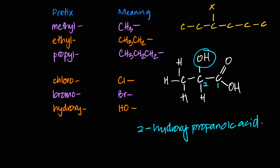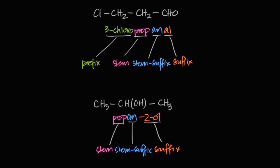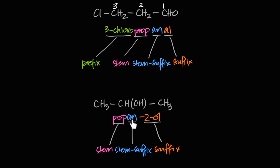Now let's look at some naming examples. This structure has one, two, three carbons — so 'prop' — with an aldehyde, all single bonds 'an', giving 'propanal'. The Cl is the substituent on carbon three, so it becomes 3-chloropropanal. Next example: three carbons — 'prop' — all single bonds — 'an' — with an alcohol on carbon two — 'ol' — giving propan-2-ol.